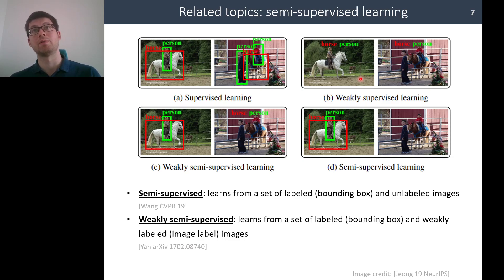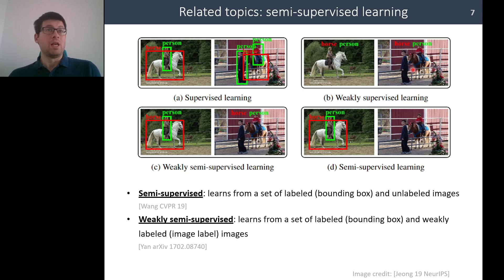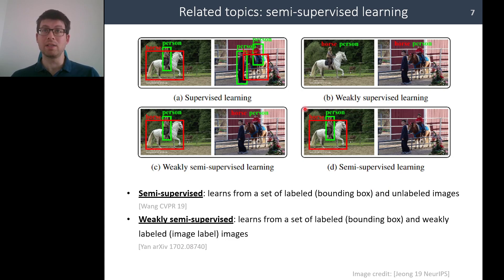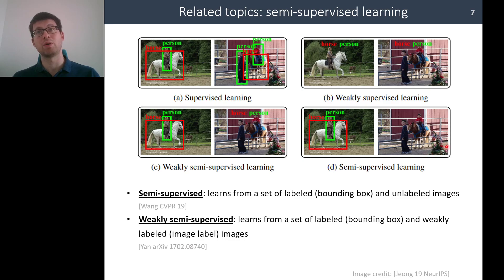In the classical semi-supervised setting, we have bounding boxes for a subset of images, and then another set of images where we don't have any labels.